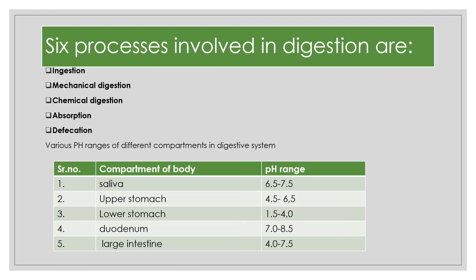The various steps involved in the digestion process are ingestion, mechanical digestion, chemical digestion, absorption and defecation. Defecation represents the removal of undigested waste from the body. The various body compartments comprise different pH ranges — that is, various acidity and basicity ranges within which the body compartments function.